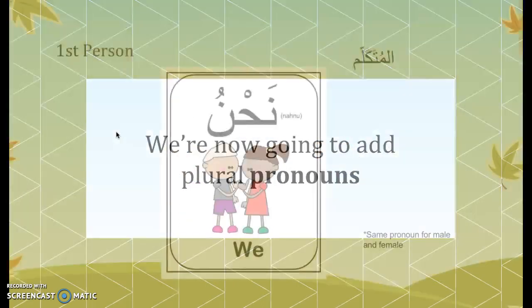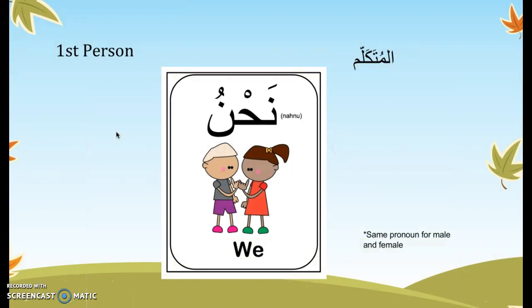The first plural pronoun is first person — المتكلم. أنا is the singular. If you're a group of people, we say نحن, meaning 'we.' Note that نحن is the same for male and female — it's gender neutral. So whether the group is all male, all female, or mixed, we say نحن. For example: نحن في الصف — we are in class.